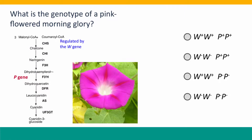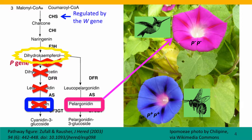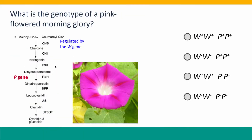So here's a question: what's the genotype of a pink-flowered morning glory? The genotype of the wild-type plant is written P+ P+, because it has a wild-type copy of the P allele. Now we're going to make this more complicated, because I'm asking you to think not just about its genotype for the P locus, but also its genotype for the W locus. So we're writing the genotype for two genes here.